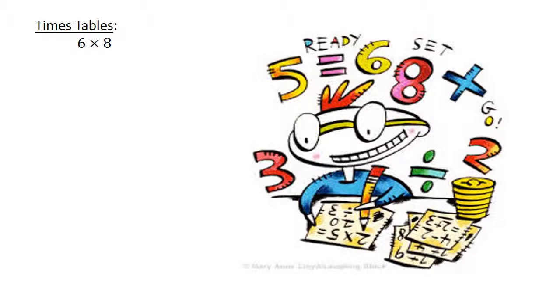6 times 8 equals 48. 8 times 7 equals 56. Addition: 27 plus 25 equals 52. Subtraction: